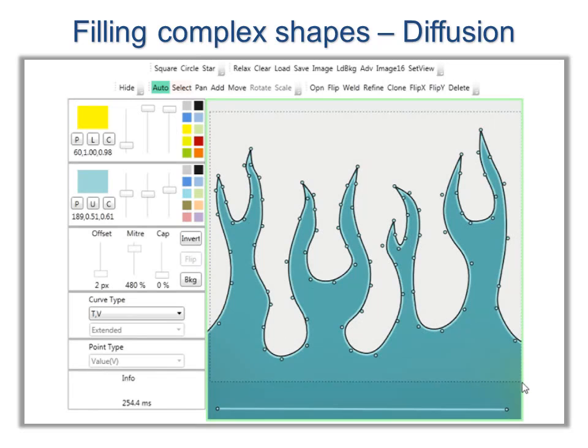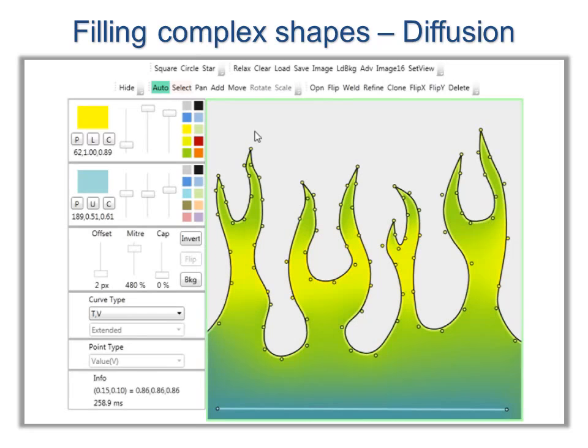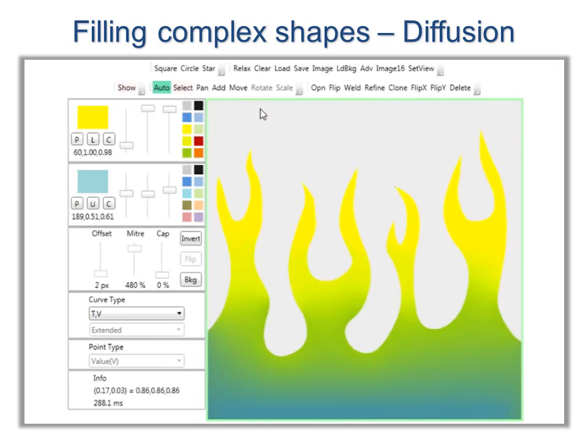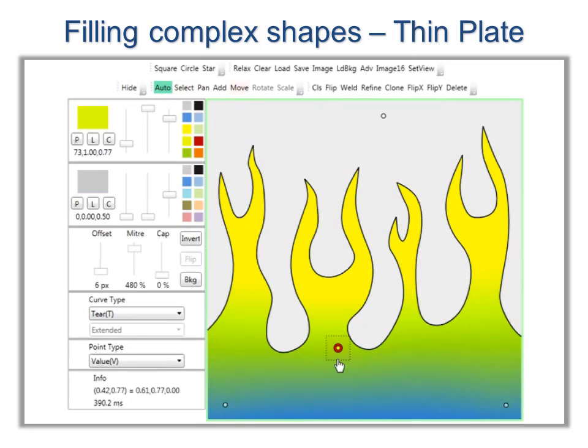With diffusion curves, it can be tedious to specify colors along complex boundaries. Thin-plate interpolation of sparse points smoothly fills arbitrary shapes.